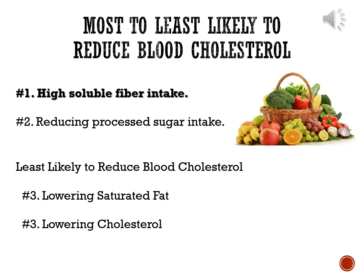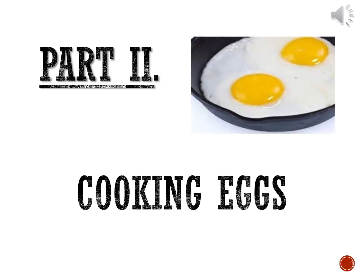For the second section, we're going to talk about the science of cooking eggs, mainly looking at three principles: coagulation, emulsification, and foaming. We talked about coagulation and foaming in the last presentation, and we've also talked about emulsification, so a lot of this should be review. Try to pick up on similar concepts between these three different topics.